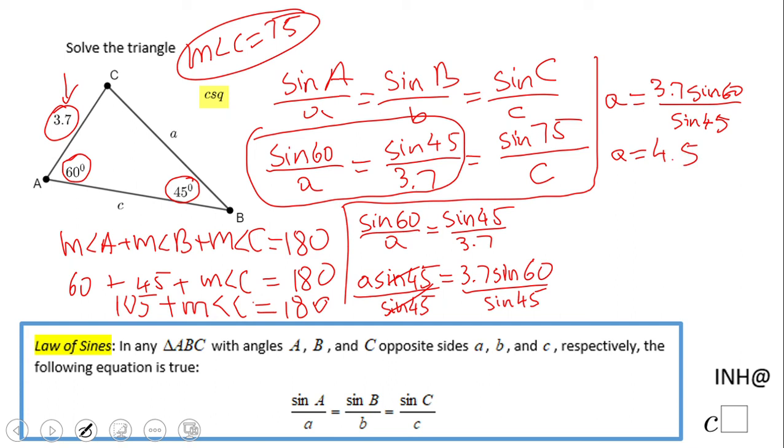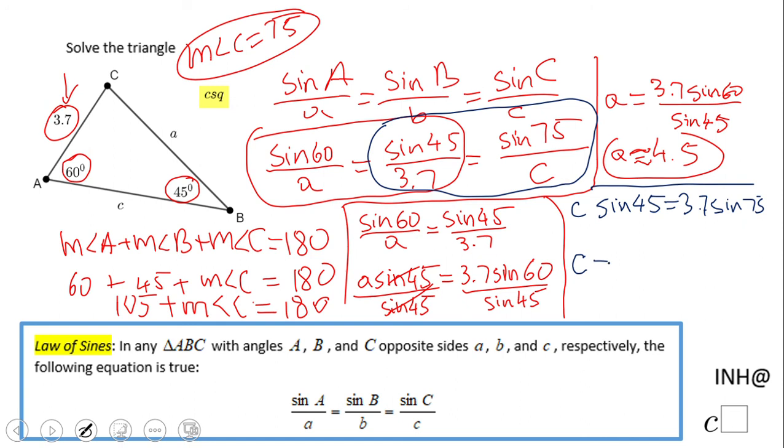See what we can do for c. Okay, we're gonna take now these two guys, all right? And we're gonna have c times sine of 45 equals 3.7 times sine of 75. And c, we're gonna get the formula, an expression in fact: 3.7 times sine of 75 over sine of 45.